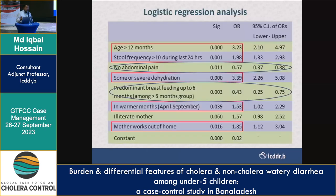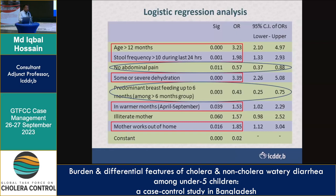We first performed bivariate analysis and identified statistically significant predictor factors. We then checked for multicollinearity using the variance inflation factor, including variables with VIF less than 5. In the final logistic regression model, we found that age more than 12 months among under-five children is a risk factor, with an odds ratio of 3.23.